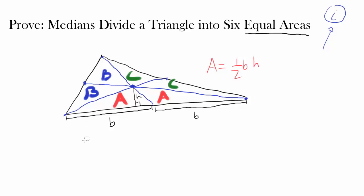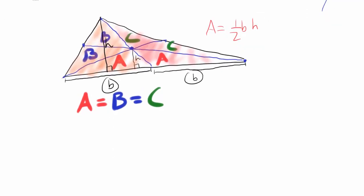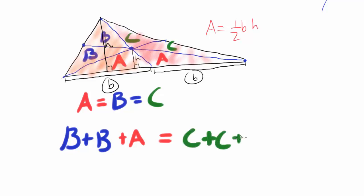But we're not done — we still have to show that a equals b, which also equals c. To do that, let's look at larger triangles. Focus on this orange triangle and the red counterpart. Do they have the same area? Yes, because they have the same base and the same height from a common point. The orange triangle is composed of two b's plus one a, and the red triangle is two c's plus one a.